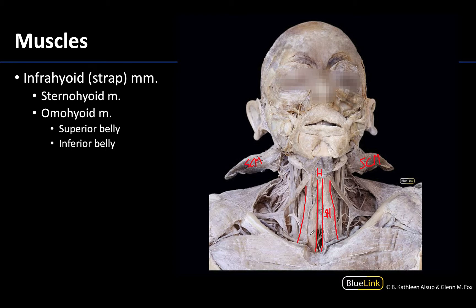The sternohyoid is very strap-like in its appearance. The omohyoid is unique in that it has two separate bellies: a superior belly from the hyoid to an intermediate tendon, which has an attachment to the clavicle, and then the inferior belly heading toward the scapula. You often lose it in dissection unless you do a more destructive dissection in this region. So there is that superior belly, intermediate tendon, and inferior belly.